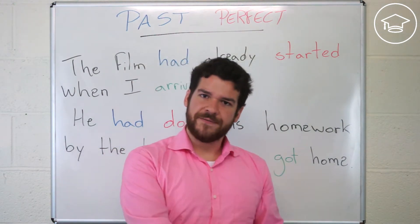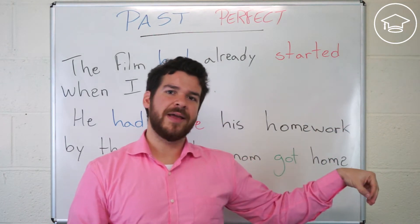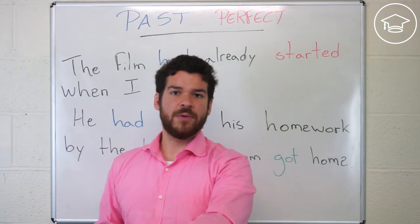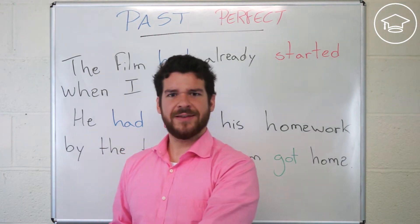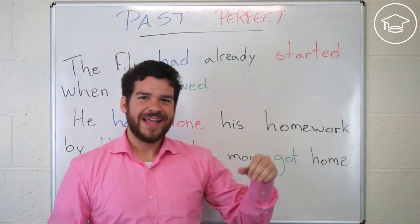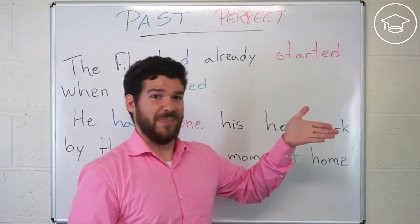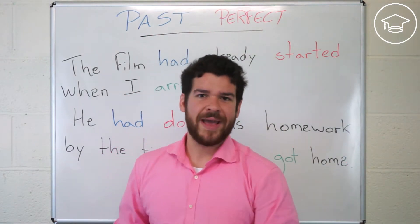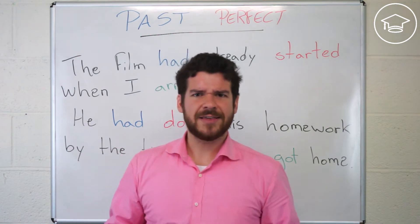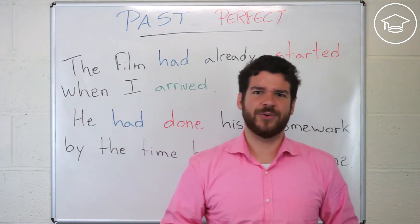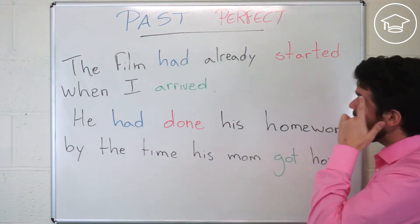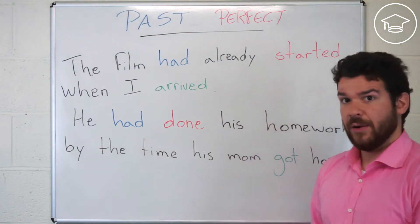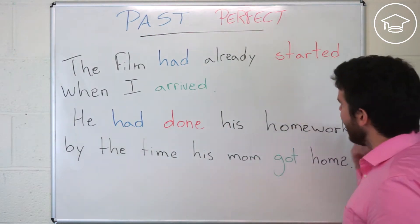So what is the past perfect? The past perfect is when you want to focus on something that happened before something else happened. It's the past of the past — the past of the past, my friends. Let's see how it applies to real life. The film had already started...